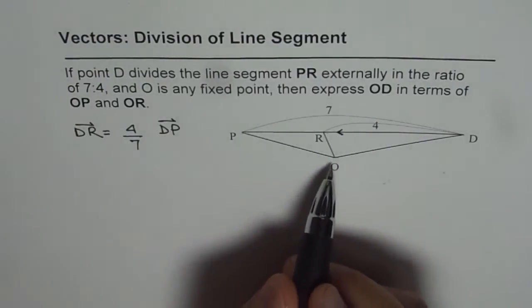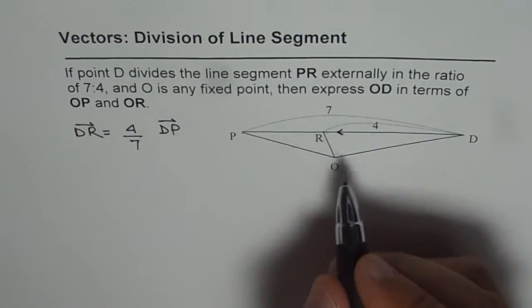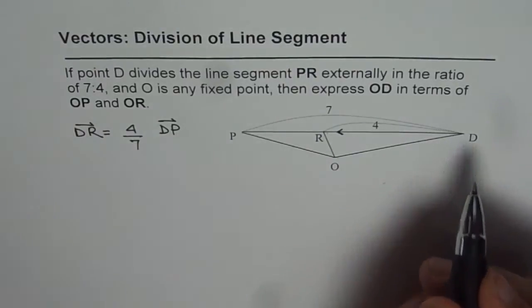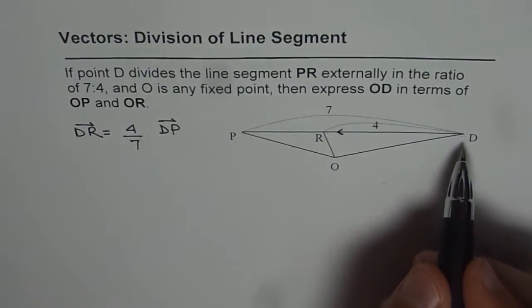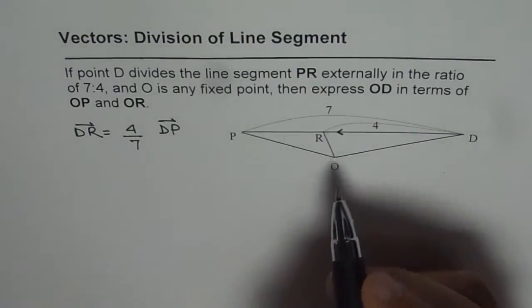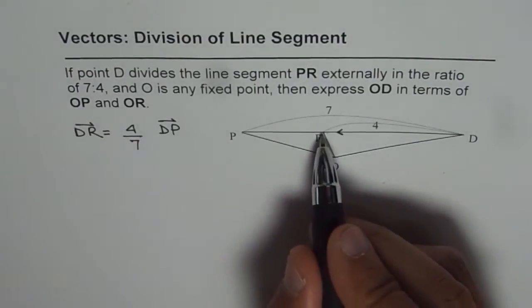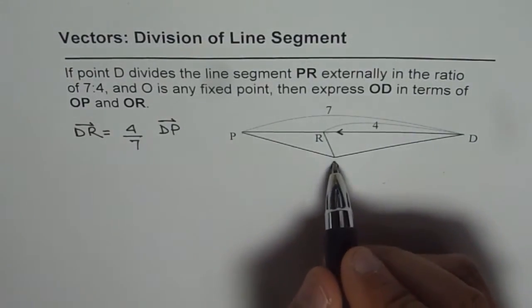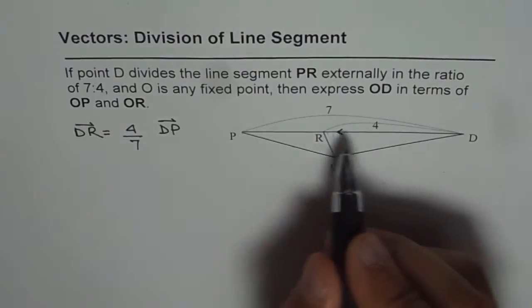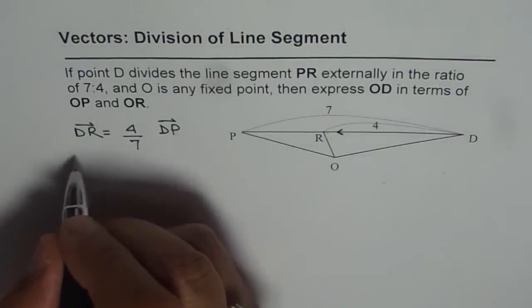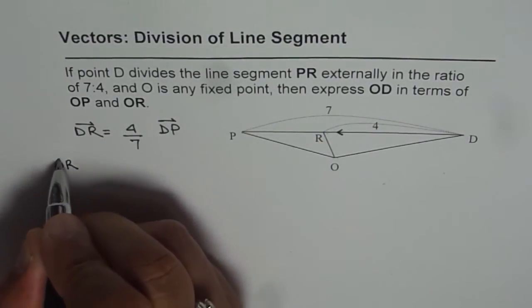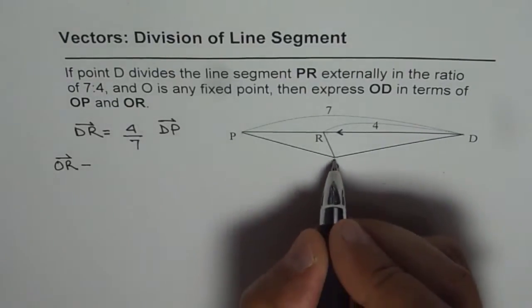Now, what is OP, what is OR and what is OD? Now, what we can do is, we can write DR as OR minus OD, right? So, the vector DR can be written as OR, so write OR minus OD.